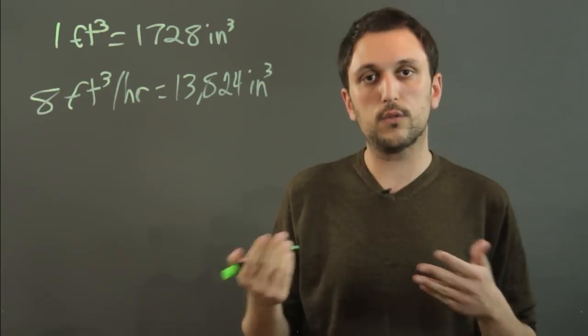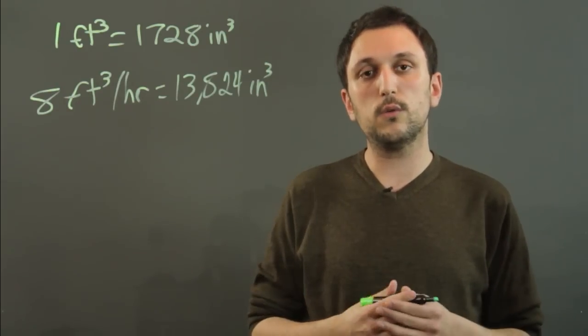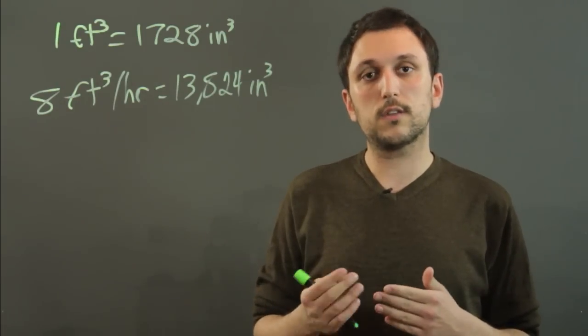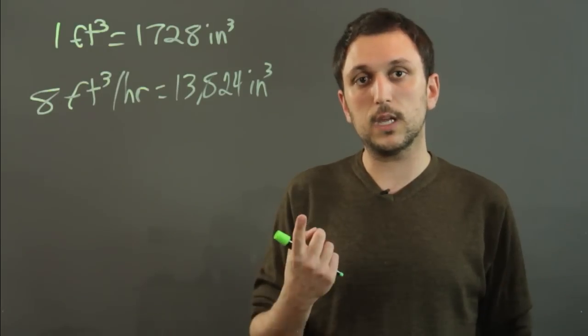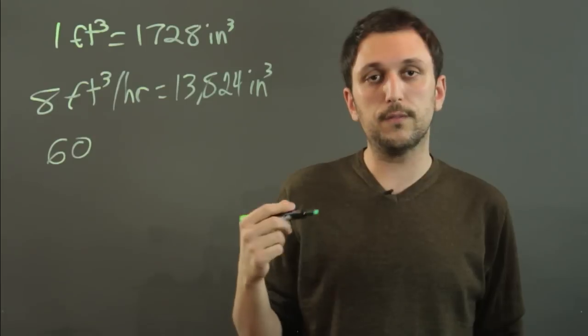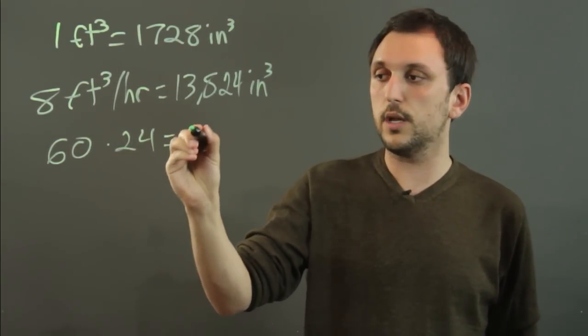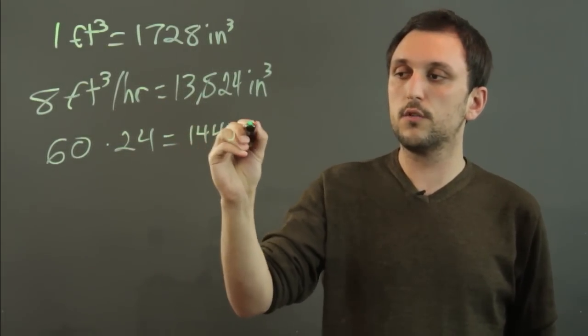I have this flow rate, and it's going into a bathtub. What you do is you take the square measure of the base of the bathtub. Let's say the length of the bathtub is 60 inches, and the width of the bathtub is 24 inches. 60 by 24 equals 1440 square inches.